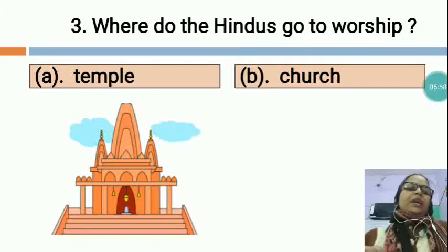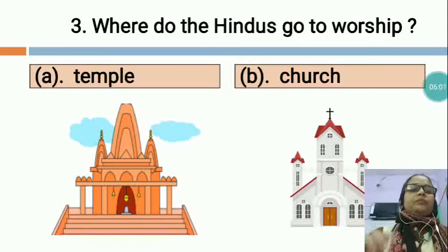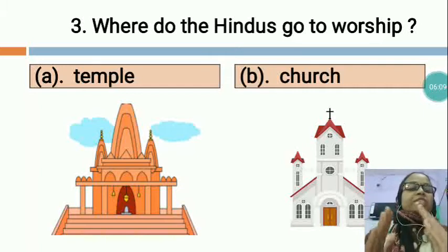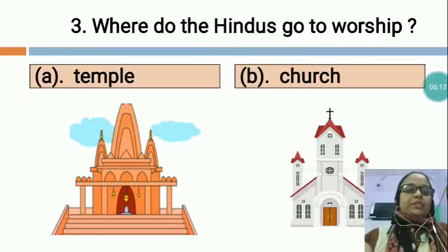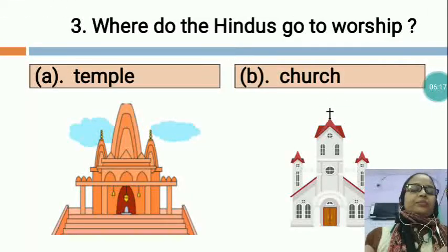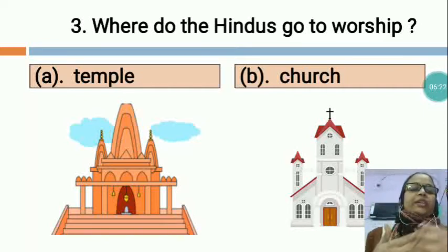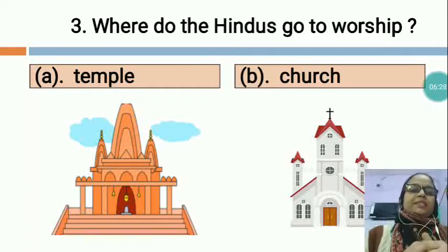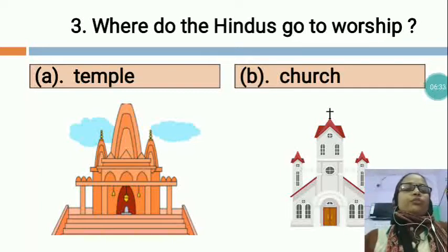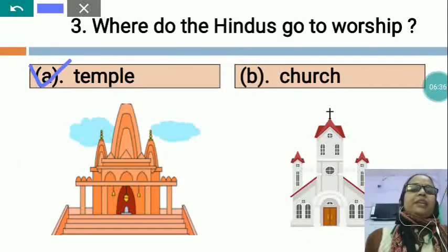This is the picture of a temple and this is the picture of a church. Hindus go to worship in temple and Christians go to worship in church. You can see this is the symbol of the Christian religion. In the temple you can see the God and goddess statue, but in the church we worship Jesus Christ. So where do the Hindus go to worship? Hindus go to worship in temple. We will tick temple.